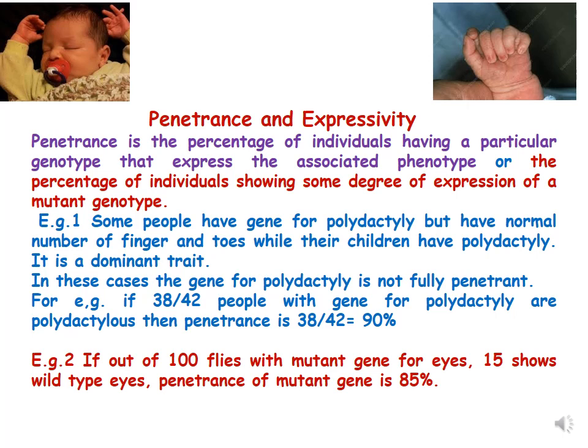So we say that penetrance of the mutant gene is only 85% — it is an incomplete penetrance. Penetrance is related to the expression of the gene in the individual. If the gene is expressed and we can see the mutant phenotype, we say the mutant gene is penetrant. This penetrance can be fully penetrant or incompletely penetrant. If fully penetrant, 100% of individuals show the mutant phenotype; if incomplete, only some percentage of individuals show it.